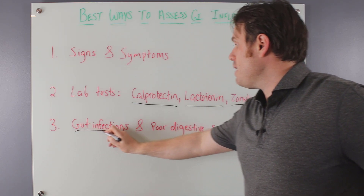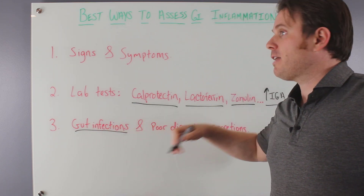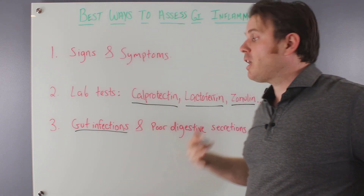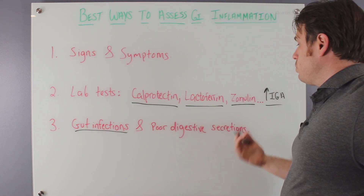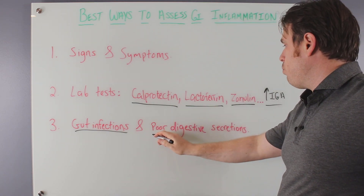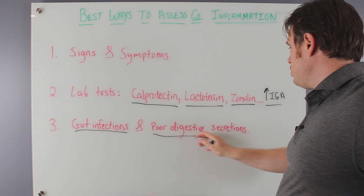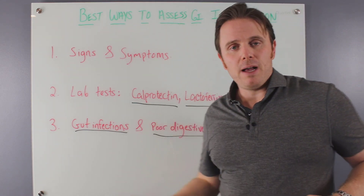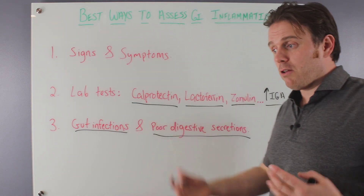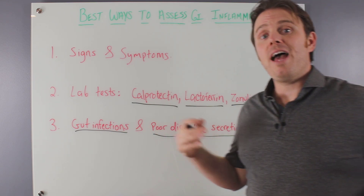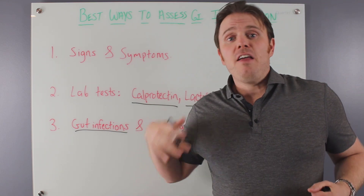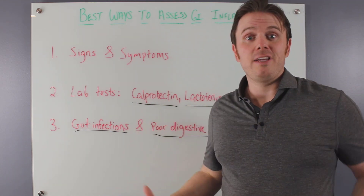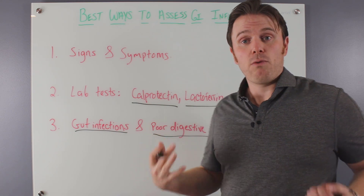Gut infections can have a major impact by activating that fight-or-flight sympathetic nervous system response, and also by reducing digestive secretions — HCL, enzymes, bile salts. If we don't have enough of those, that can generally drive inflammation just because the food is sitting there and rotting.